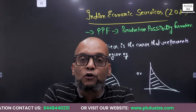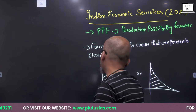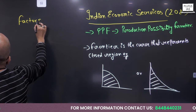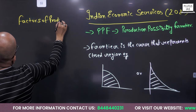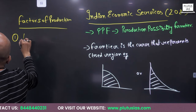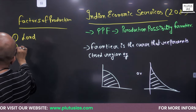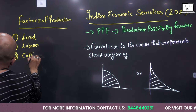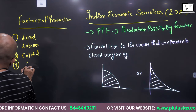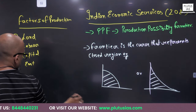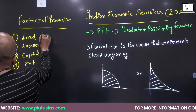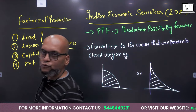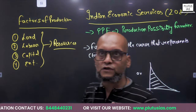When I say resources, I am talking about the factors of production. What are the factors of production? There are actually four factors of production you all might be aware of: land, labor, capital, and enterprise or entrepreneur. These are referred to as resources in our discussion — we are going to call these four factors of production as resources.